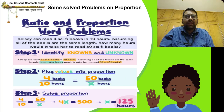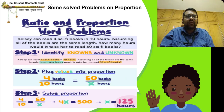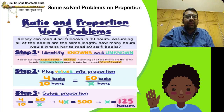Step 3: Solve the proportion by cross multiplication. Numerator 1 into denominator 2 equals denominator 1 into numerator 2, which gives 4 into x equals 500. So 4x equals 50 into 10, which is 500.